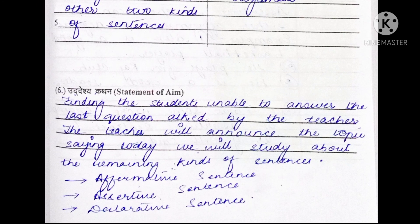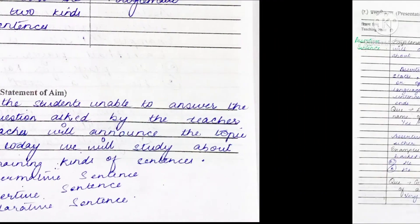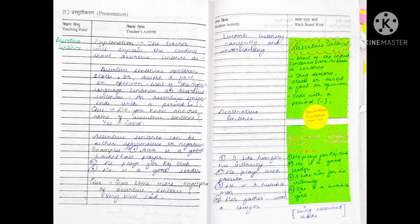The teacher will announce the topic saying: today we will study about the remaining kinds of sentences. If the teacher asks the question — do you know another name of assertive sentences? — the children will answer: declarative sentences.